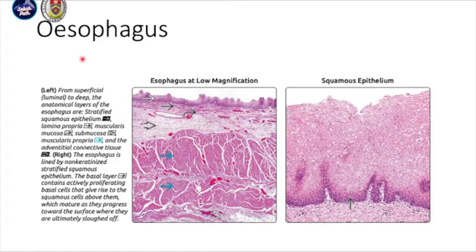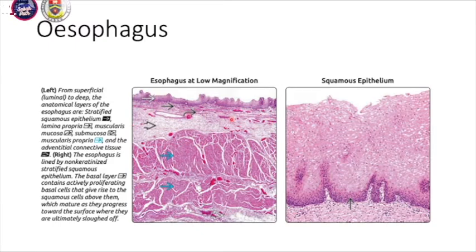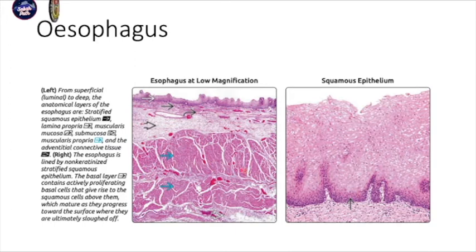For the histology, from the esophagus, you can see from the superficial surface it is stratified squamous epithelium. The darker area of the squamous epithelium is the basal layer that is actively proliferating. Beneath the mucosa you have the lamina propria, then the submucosa — which usually has a lot of blood supply. Beneath the submucosa you have the muscularis propria, with a lot of connective tissue and smooth muscle, and the outermost layer is the adventitia.